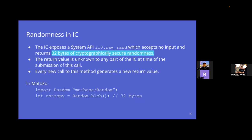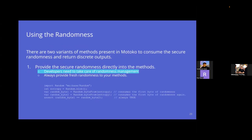On the IC, the system API ic0.raw_rand accepts no input and returns 32 bytes of cryptographically secure randomness. The return value is unknown to any party on the IC at the time of submission — providing unpredictability. Every new call generates a fresh return value. In Motoko, you invoke this via the Random module: calling Random.blob() gives you 32 bytes of secure randomness.